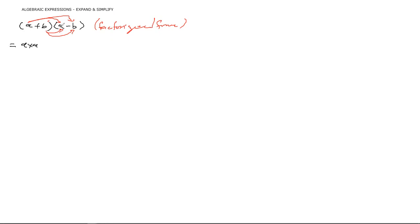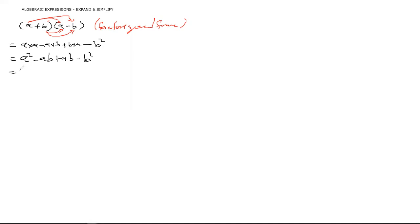I'm going to multiply: a times a gives a squared. Now, positive times negative is negative, so that's a times b giving minus ab. Then b times a — positive and positive — gives plus ab. And then b times b — positive times negative — gives minus b squared.